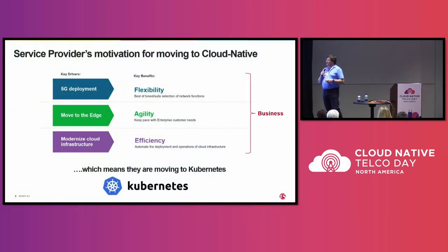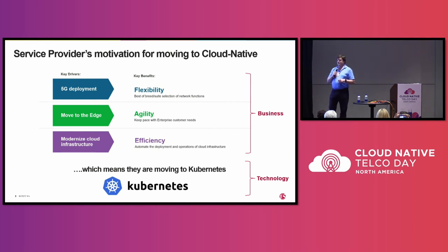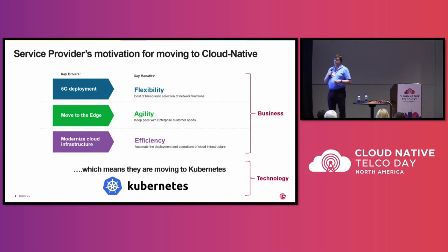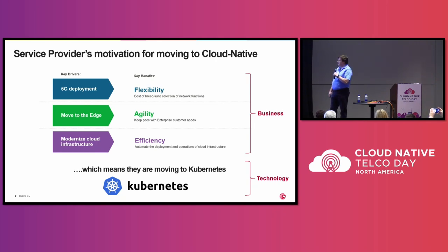If you've heard me speak before, I tend to talk about this first: for several business reasons, the telcos are moving toward cloud-native practices. The biggest one, obviously, is 5G, but also cloud-native practices can make things significantly more efficient and aid in speed to market. This means that they are using Kubernetes.